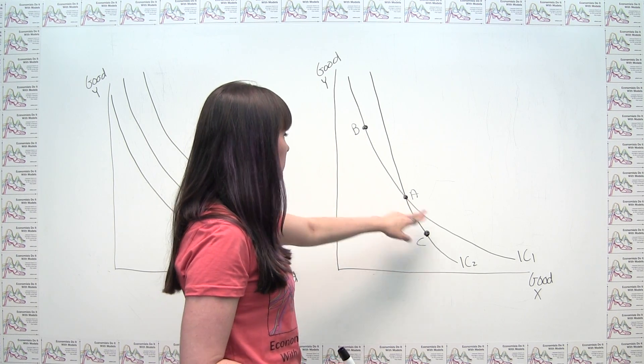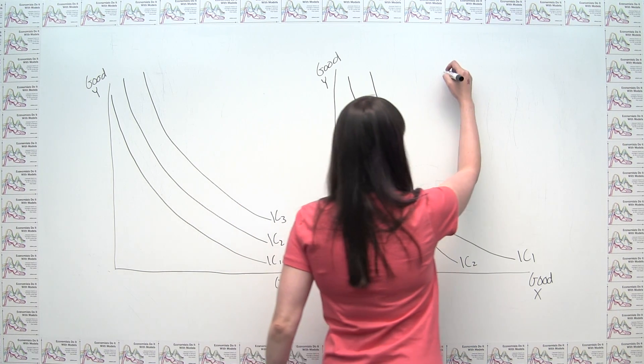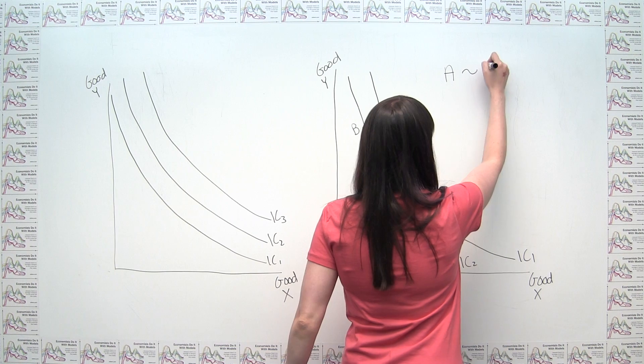A and B are on the same indifference curve, indifference curve one. So it must be true that the consumer is indifferent between A and B.